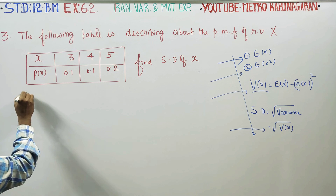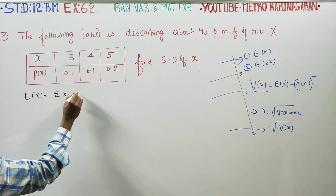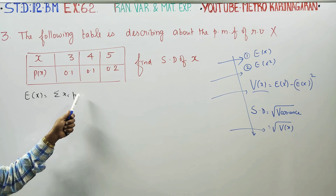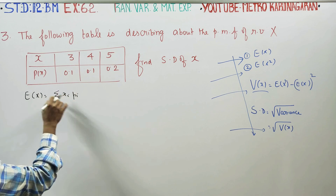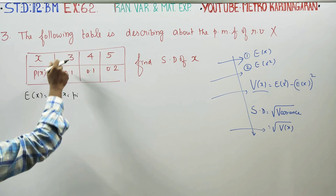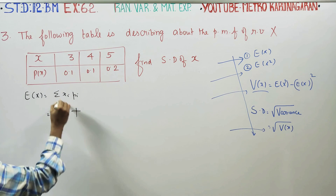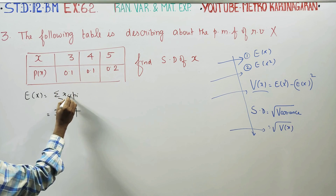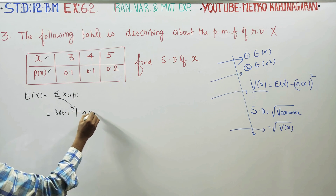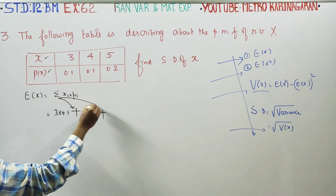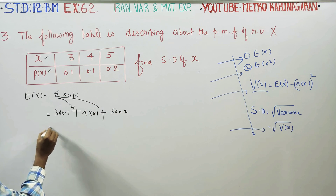First we will start with expectation of X. Expectation of X formula is sigma xi pi. Write down the formula, mark it. Multiply and add: 3 into 0.1 plus 4 into 0.1 plus 5 into 0.2.